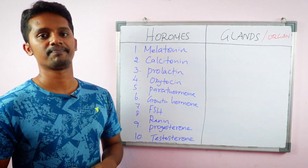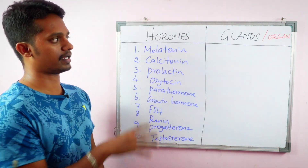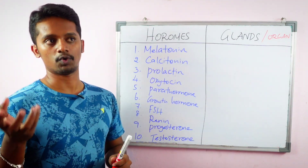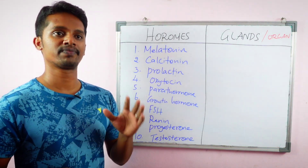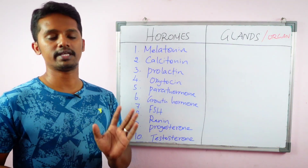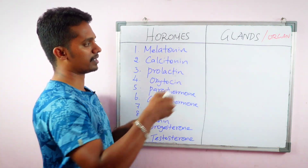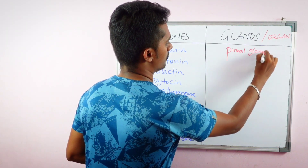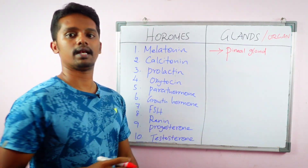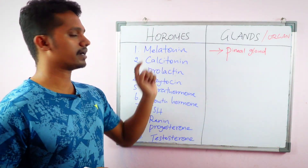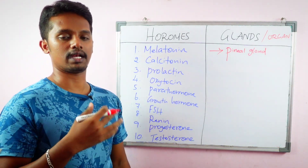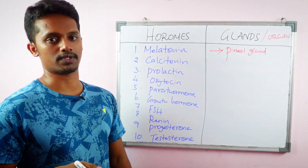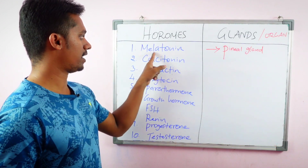First one: Melatonin. Melatonin is produced by the Pineal gland. This hormone is associated with the sleep cycle — it regulates the sleep cycle.